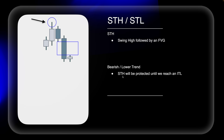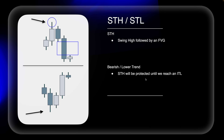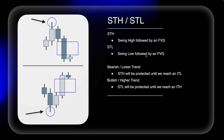In a bearish or lower trend, short-term highs will be protected until we reach an intermediate term low. The exact inverse applies to a short-term low: a swing low followed by an FVG, where the short-term low does not have swing lows higher to the left and higher to the right of it. In a bullish, higher trend, a short-term low will be protected until we reach an intermediate term high.